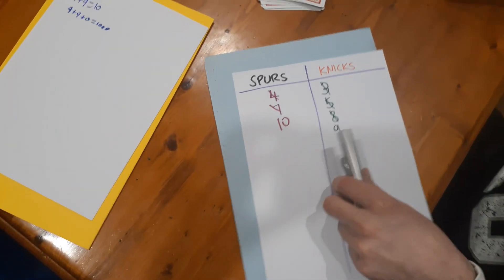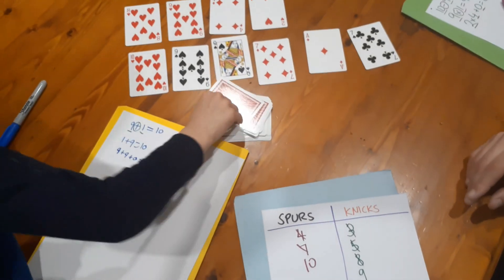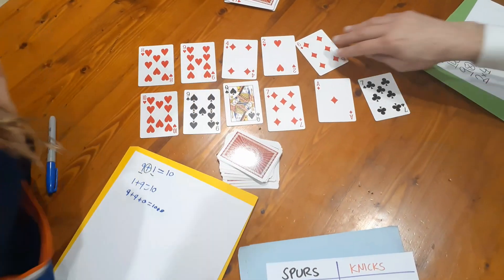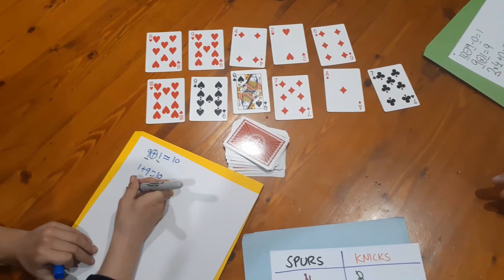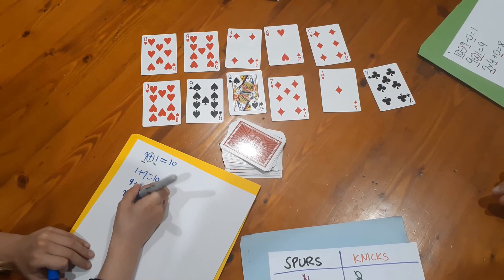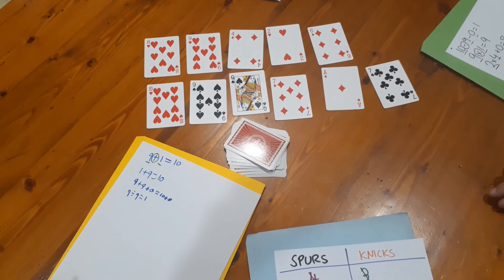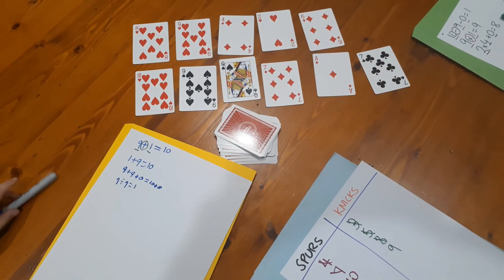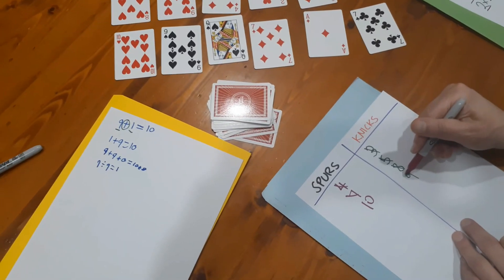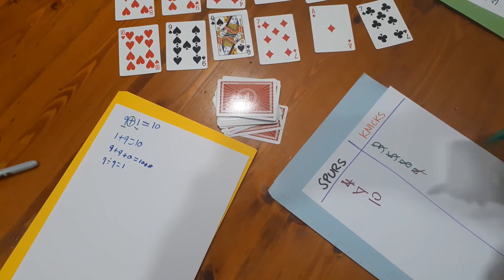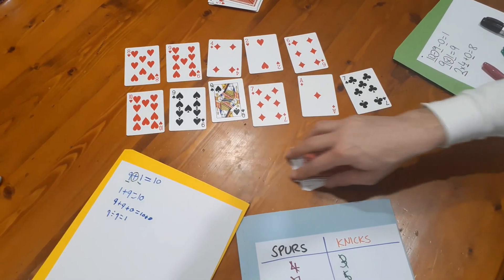Nash does nine divided by nine equals one. He records: 9 ÷ 9 = 1. That's three points, so Nash moves up to twelve. That's ten cards used — two more to go in the first quarter.